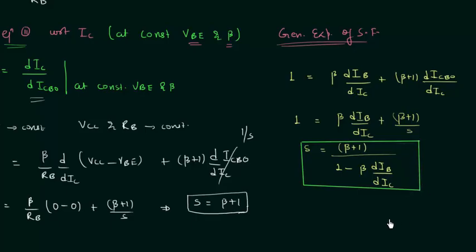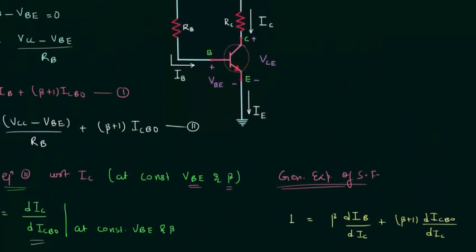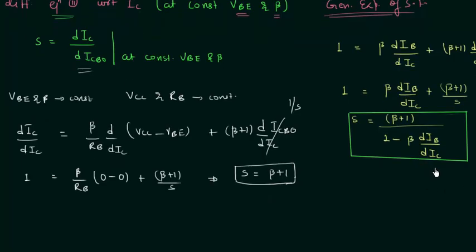In the case of fixed bias configuration, the base current IB is independent of the collector current IC, so dIB/dIC equals zero. Therefore the stability factor S equals (β+1) divided by (1 minus 0), which equals β+1. This is the same result obtained by differentiating equation number two directly.